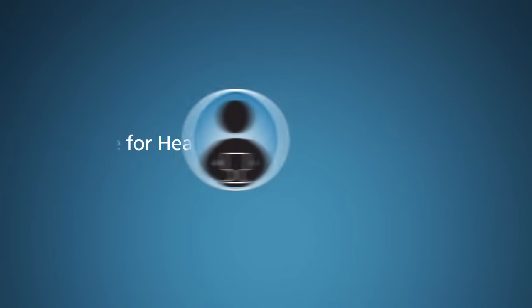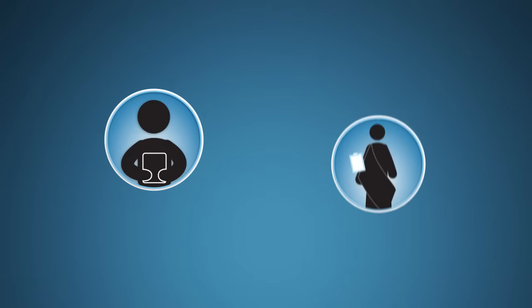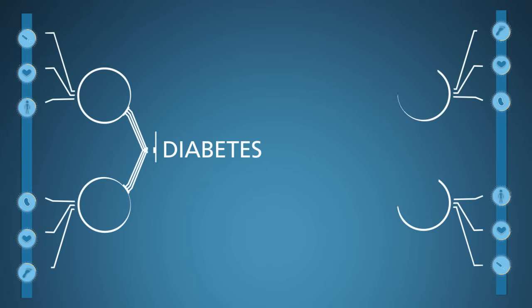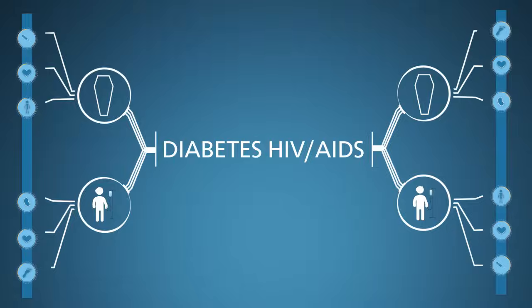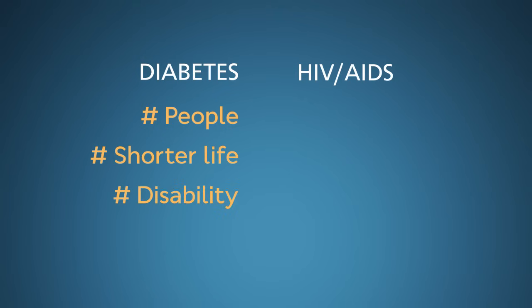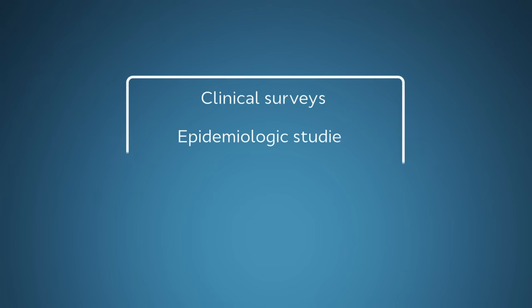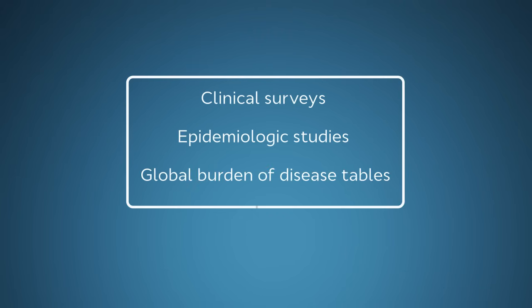Let's return to your immediate dilemma. Using DALYs, you can now provide your boss, the Minister of Health, with exactly the kind of estimates and information the donor wants to see. You can quantify the burden of diabetes and compare that to the burden of other diseases, such as AIDS. You still need to collect data on such items as the number of people who have diabetes, how much their lives are shortened on average, and how much disability they suffer. You also have to gather the same data for individuals with HIV infection. The necessary information is all generally available through clinical surveys, epidemiologic studies, and global burden of disease tables.